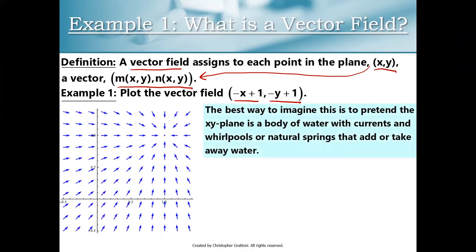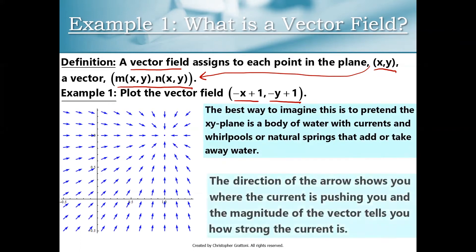If you want to get a good intuitive understanding for how a vector field behaves, a nice framework is to imagine that a vector field in the xy plane is a body of water with ocean currents, whirlpools, and natural springs. If you imagine that each of these arrows represents the ocean current at a given point in space, that gives you a pretty good idea of the behavior of a vector field. The direction of the arrow tells you where the current is pushing you and the magnitude tells you how strong the current is.